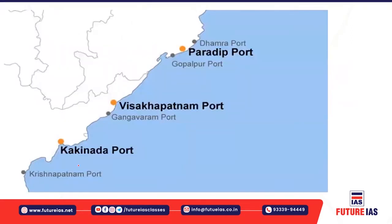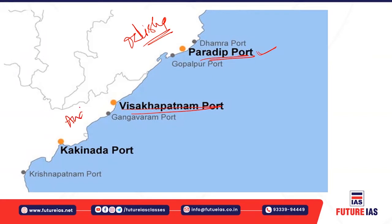On the eastern coast, you have Paradip Port — a natural deep-water port on the east coast of India, located in Jagatsinghpur district of Odisha, situated at the confluence of the Mahanadi river and the Bay of Bengal. The second is Visakhapatnam Port, one of the 13 major ports in India, the only major port in Andhra Pradesh, India's third largest state-owned port by cargo volume, and the largest port on the eastern coast. The third is Kakinada Port.